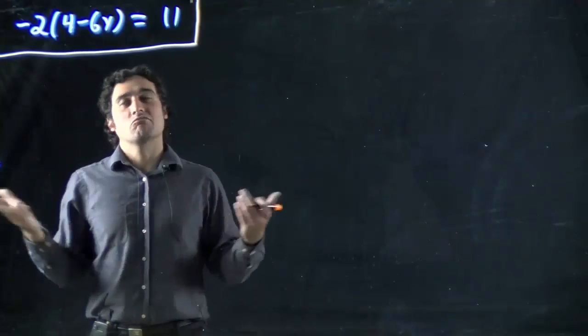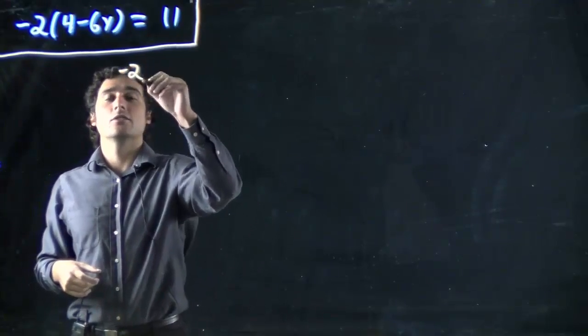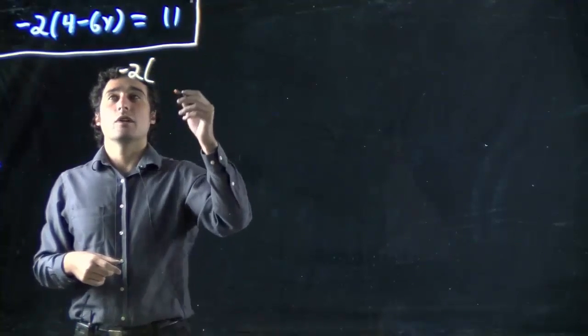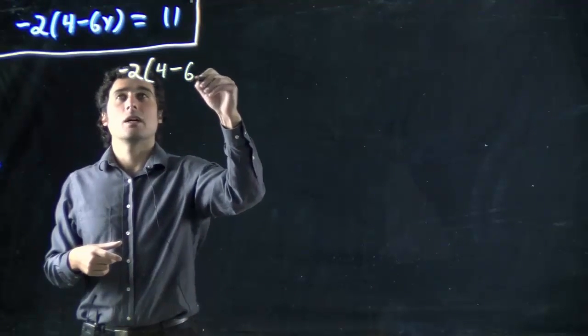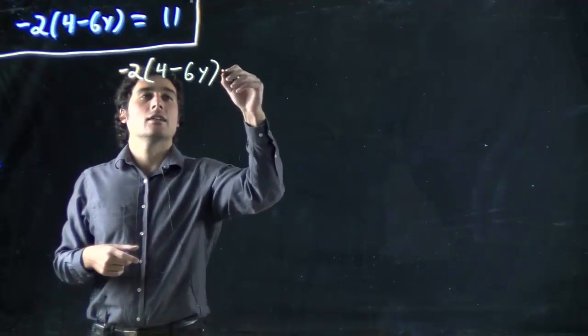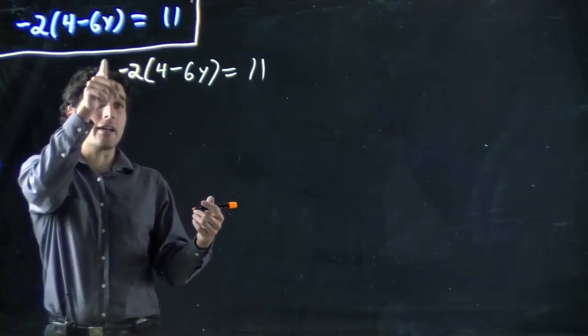So first way, I'm going to go with the one I prefer and multiply it in. So we've got minus 2 and when we want to get rid of this, actually I'm just going to start off by writing it: minus 6y equals 11. So if I want to get rid of this minus 2, I've got to multiply it in.